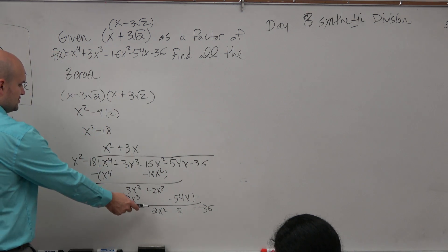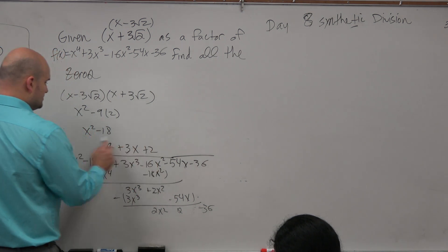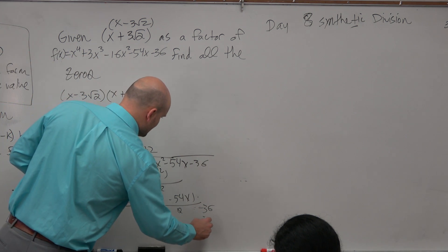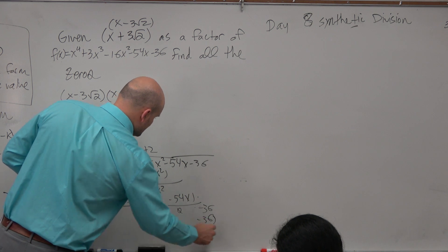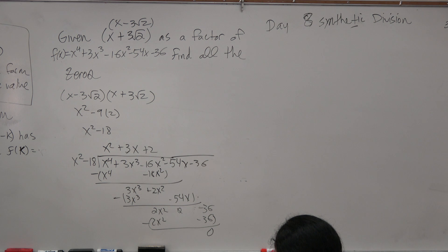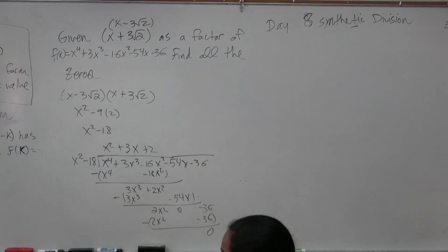x goes into 2x squared positive 2 times. 2 times x squared is 2x squared. 2 times negative 18 is a negative 36. Subtract your rows. And you get 0. Okay. Sorry. I had to just do that kind of quickly. But you guys should at least be able to do that. And if you had trouble with the long division, just come and see me. But anyways, so trying to pick up from my mistake.